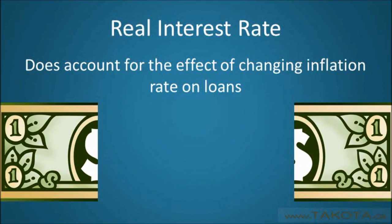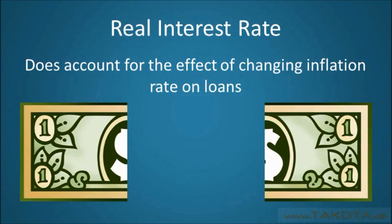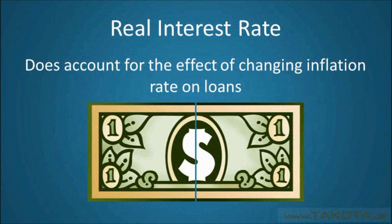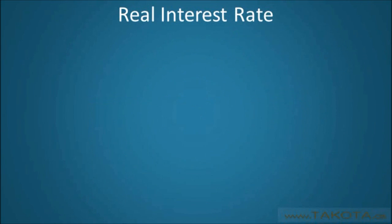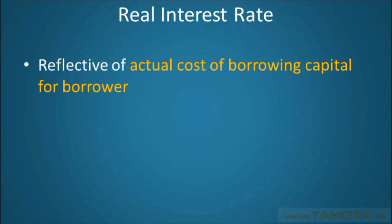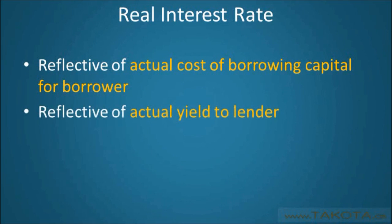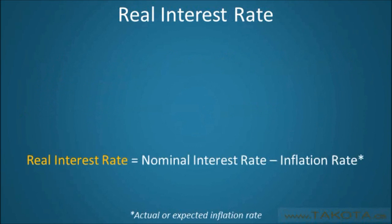On the other hand, the second measure of interest rates — the real rate of interest — provides a more complete picture of the cost of borrowing money by accounting for the effects of inflation on loans. The real interest rate reflects the true cost of funds to the borrower and the true yield to the lender, and is calculated by subtracting the inflation rate, actual or expected, from the nominal interest rate, an equation known as the Fisher equation.